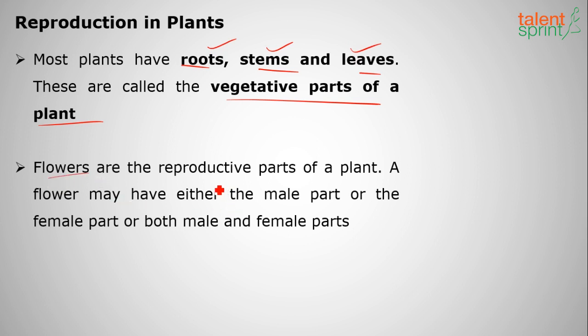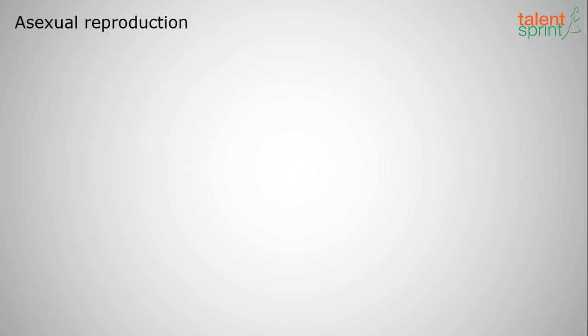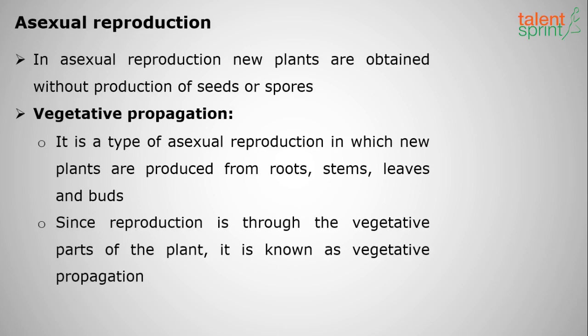Flowers are the reproductive parts of a plant. A flower may have either the male part or the female part, or both male and female parts in a single flower. In part one we shall discuss asexual reproduction in plants, and in part two we shall discuss sexual reproduction. So there are two ways of reproduction in plants, just like animals — asexual and sexual.